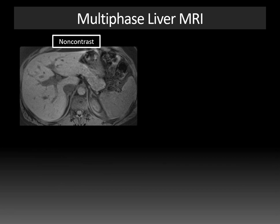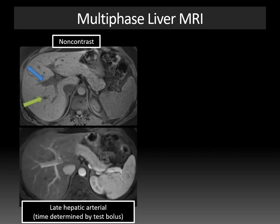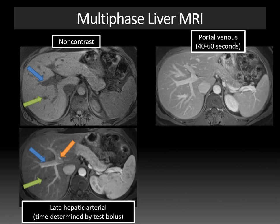Here's a typical T1 3D gradient echo fat-suppressed image without contrast. The portal vein and hepatic vein are non-enhancing and hypointense, and the surrounding subcutaneous fat is dark because fat signal is suppressed. After contrast, the late hepatic arterial phase — determined by a test contrast bolus on MRI — shows the hepatic artery and portal vein enhancing, while the hepatic veins are not yet enhancing. In the portal venous phase, the hepatic veins enhance and the parenchyma becomes much brighter.